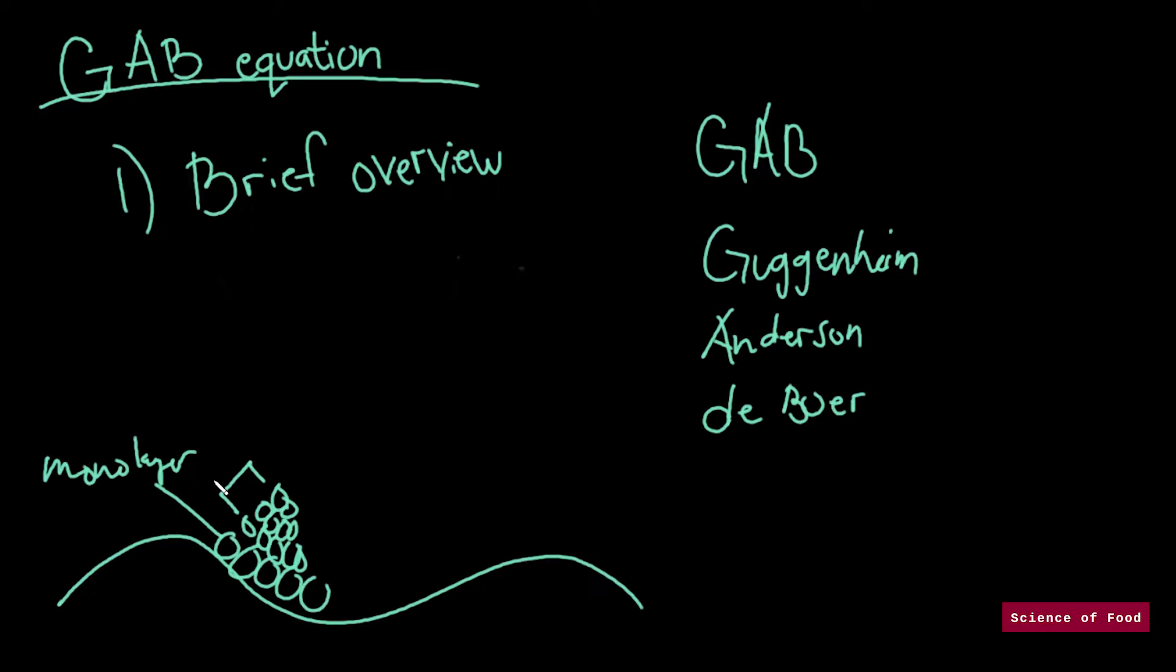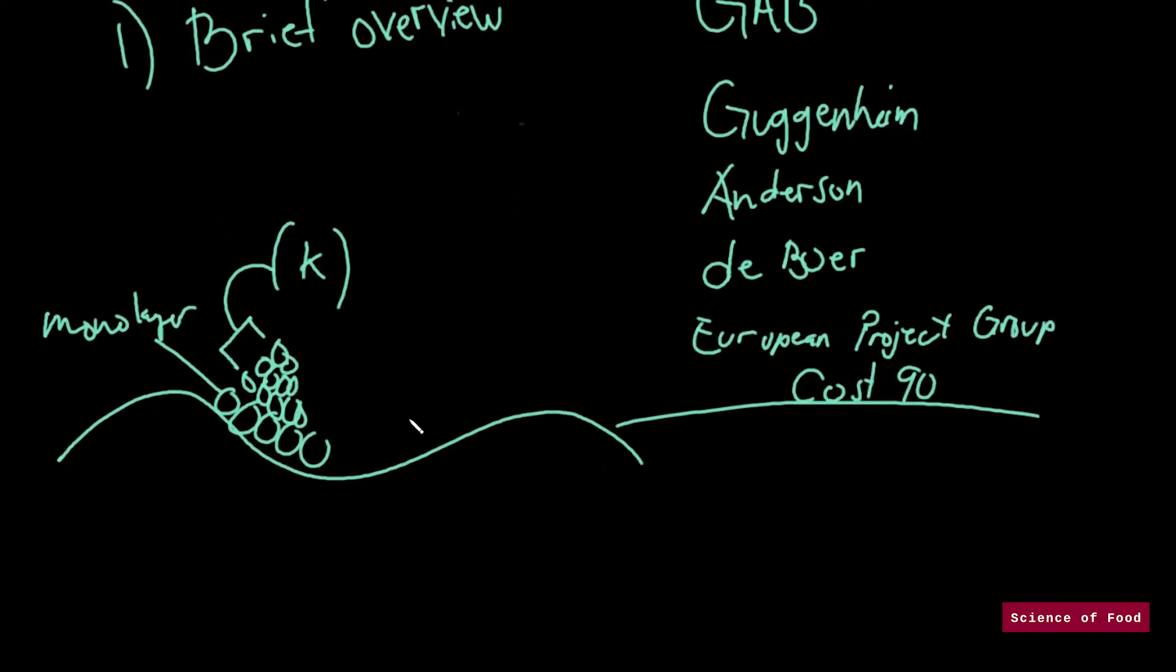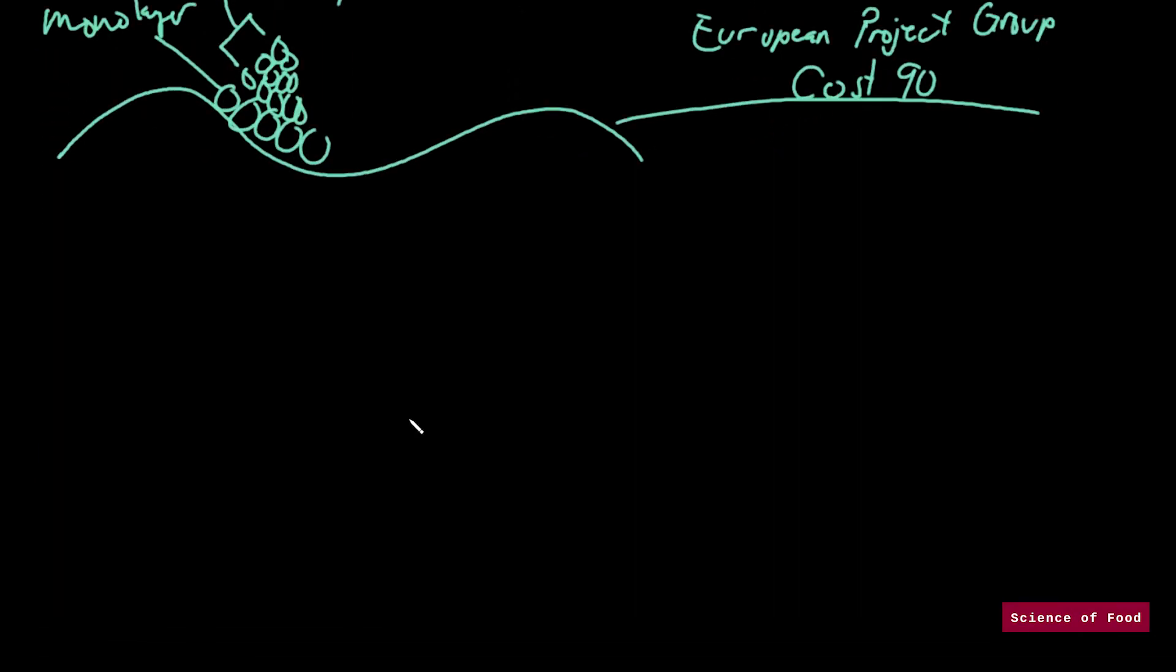And because of this, these layers of water can be accounted for by adding the variable k in our equation. And due to its success, the GAB model is being recommended by the European project group cost 90.